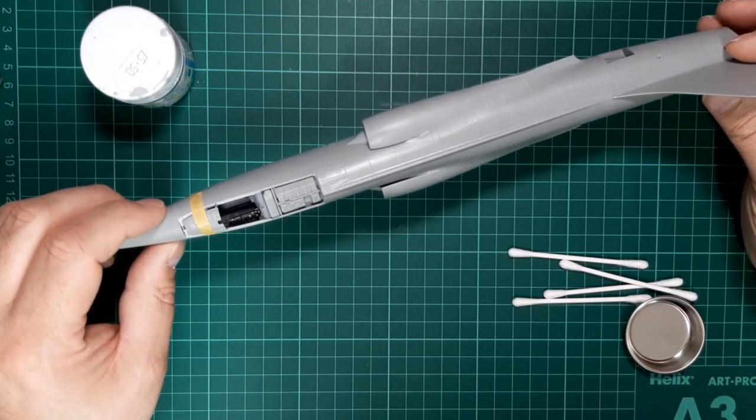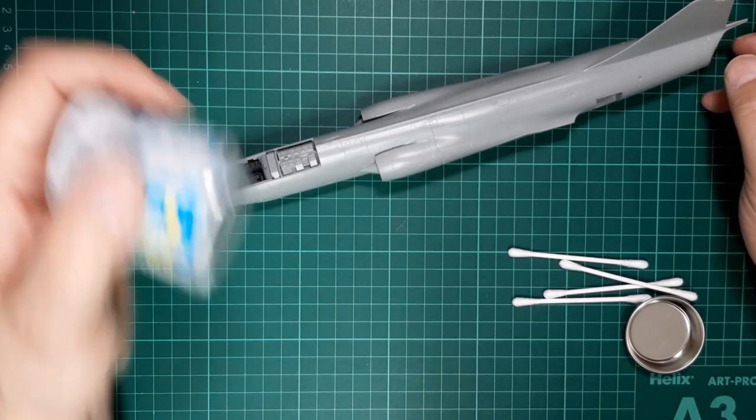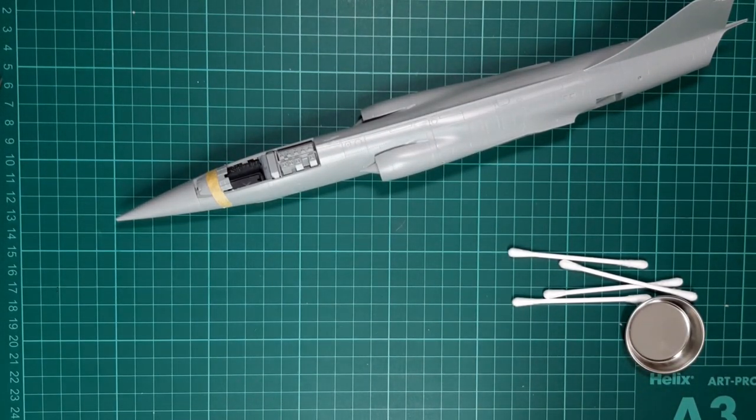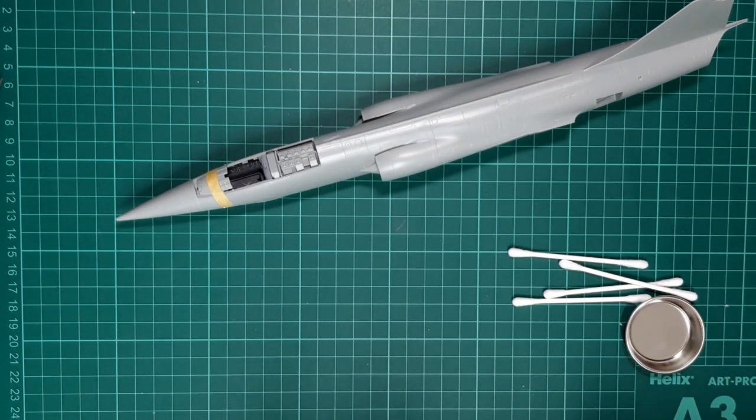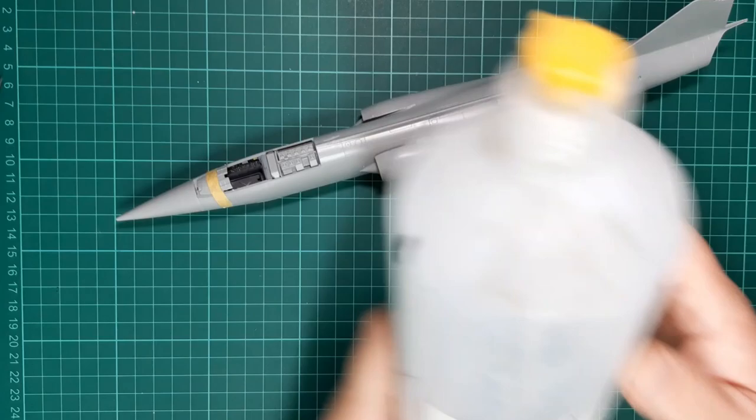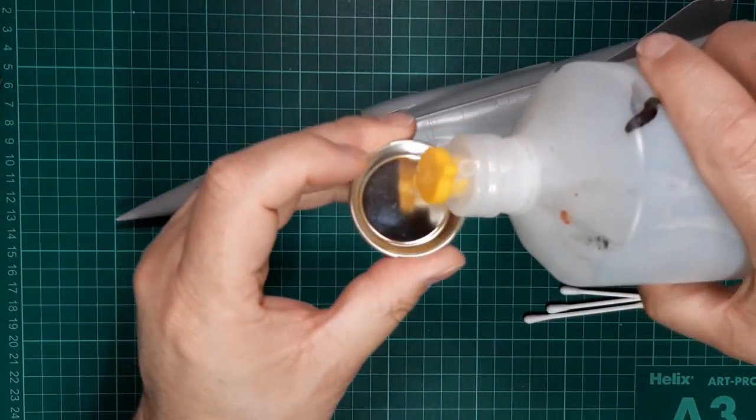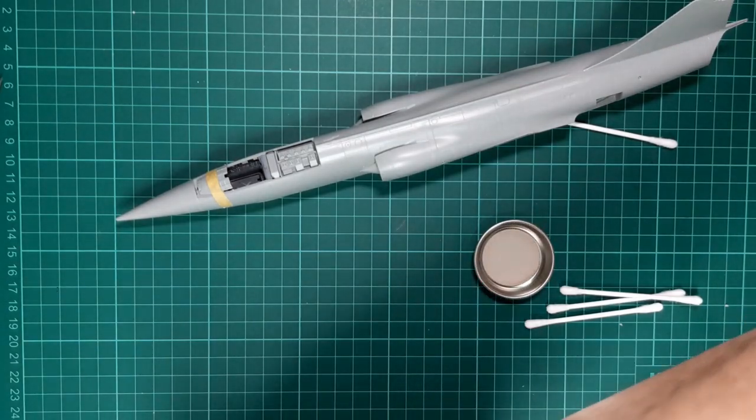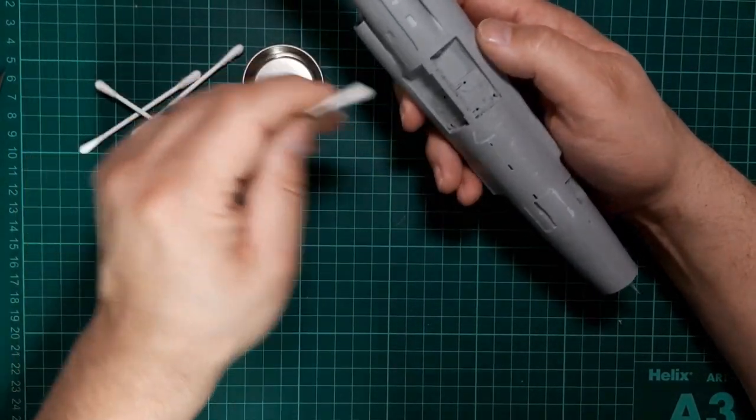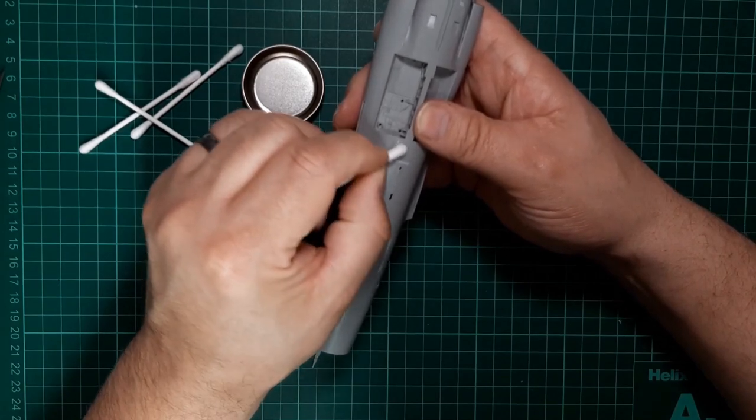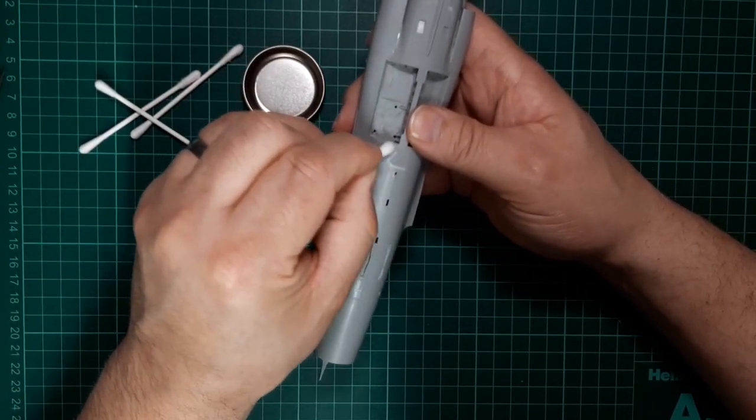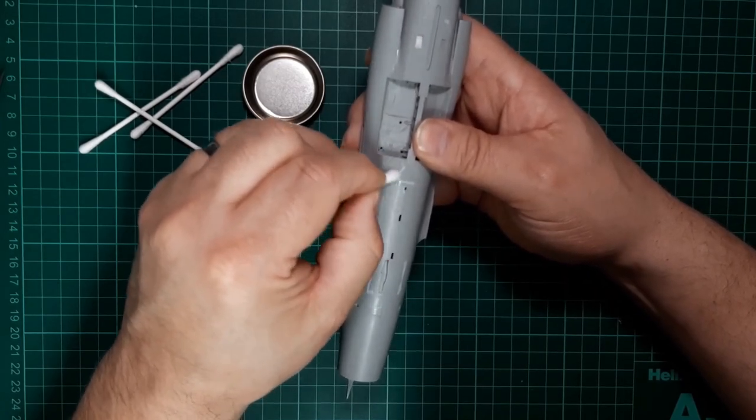For the first section of this video, we're just going to clean that off before we look at joining some of the other items to the airframe. I've diluted this Mr. Surfacer down with some cellulose thinners just to make it really thin and watery. The technique I use for removing this means there's no sanding required, so just using some IPA in a small dish, we're going to use a cotton bud.